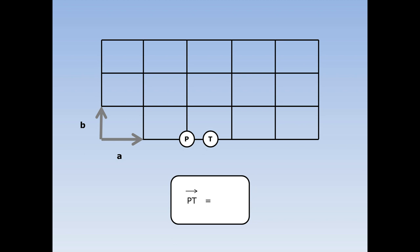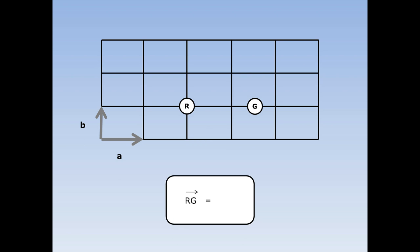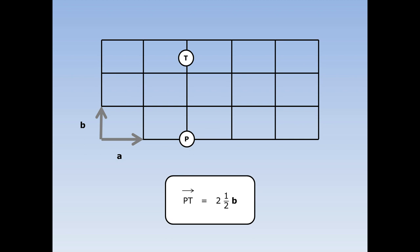How do I get from the park to the theatre? This is half an A road. How do I get from the railway station to the gym? This is one and a half A roads. How do I get from the park to the tube station? This is a journey of two and a half B roads.